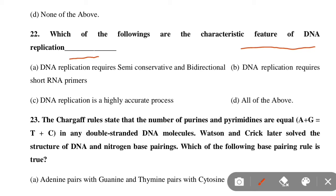Next MCQ: Which of the following are characteristic features of DNA replication? Option A: DNA replication is semi-conservative and bi-directional. Option B: DNA replication requires short RNA primers. Option C: DNA replication is a highly accurate process. Option D: All of the above. Option D is correct — all of the above are characteristic features of DNA replication.